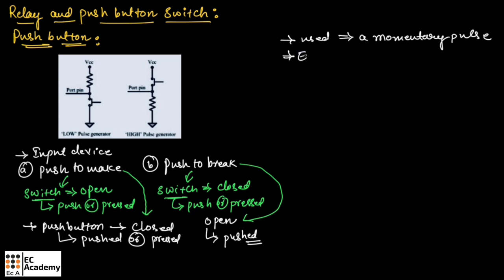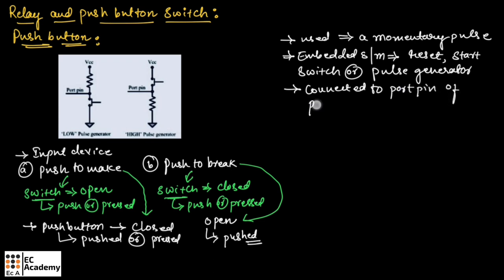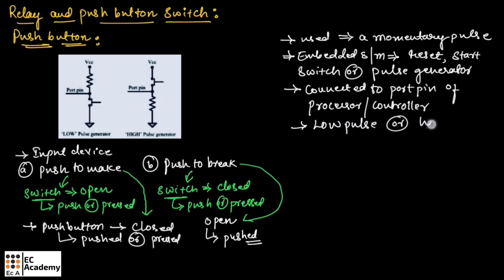In embedded system applications, a push button is generally used as reset, start switch, or pulse generator. This push button is normally connected to the port pin of the processor or controller. Depending upon how this push button is connected, it can either generate a low pulse or high pulse. When the push button is connected to VCC, it will produce a high pulse, and when connected to ground, it will produce a low pulse.